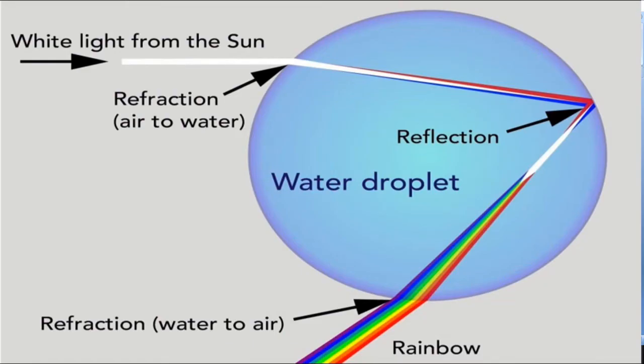The dispersal of light or sunlight through water droplets of clouds can be shown as white light from the sun passing through the water droplet where refraction of light occurs.